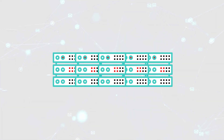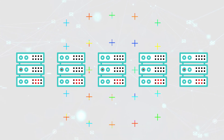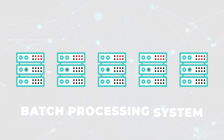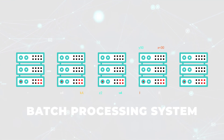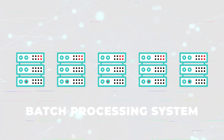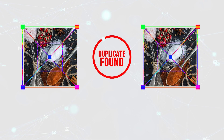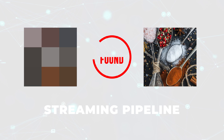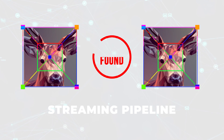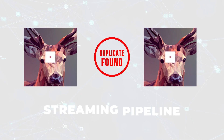Pinterest's engineering team came up with a way to do this, but in batches. The first solution was a batch processing system that would take several hours to produce results, which is a problem when the consumers of that data need to act on it in real time — for example, detecting spammers and abusers trying to harm the platform. Given these requirements, the team set out to build a streaming pipeline that would detect similar images in near real time.